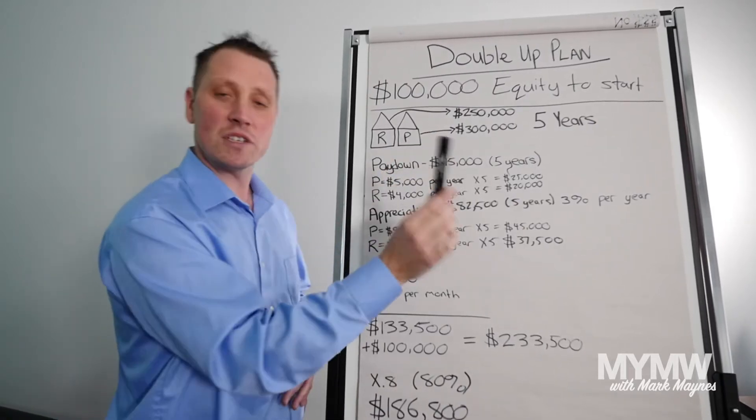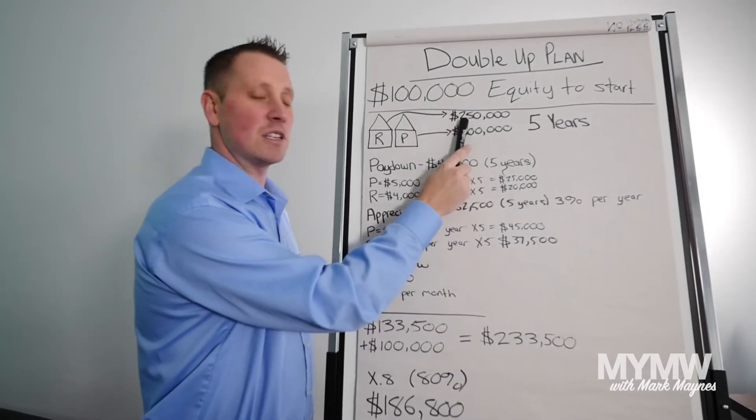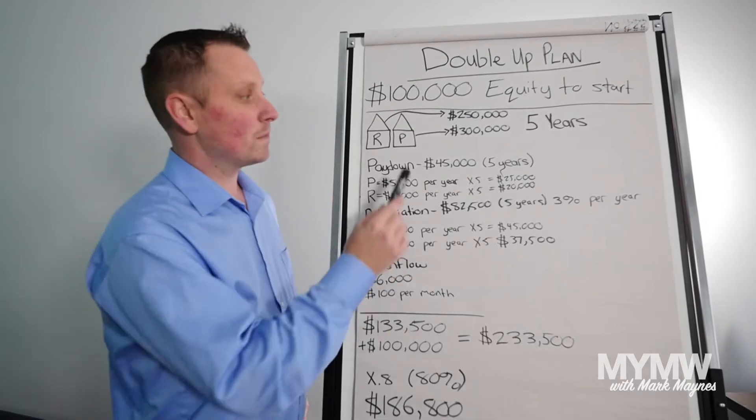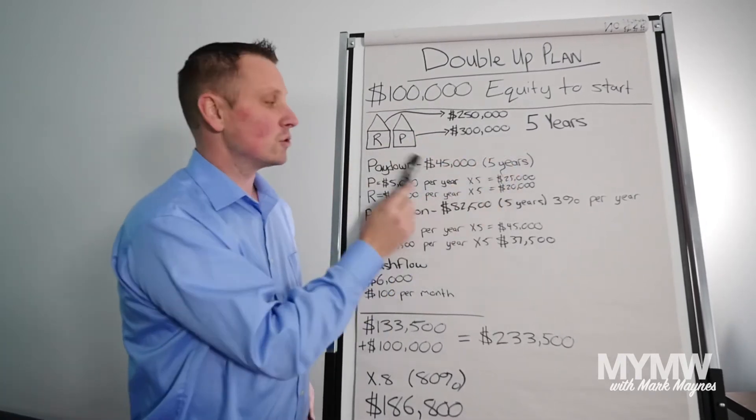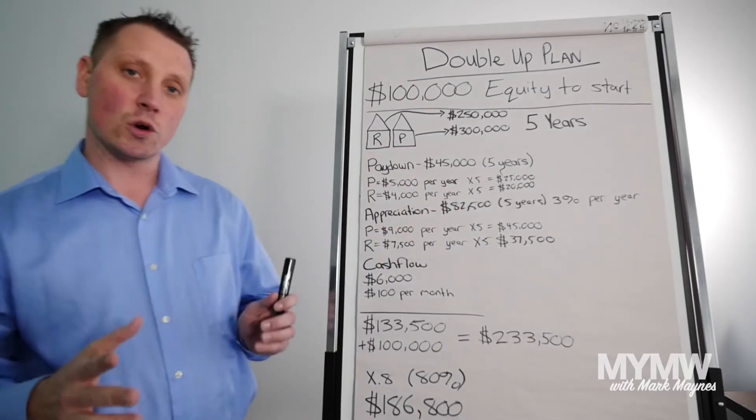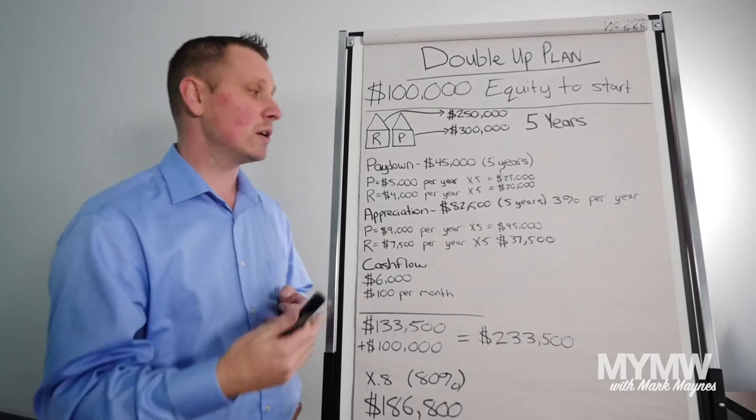Just for this example, we're going to say your house is worth $300,000 right now and the rental property you're buying is worth $250,000. So year one to five, this is a five year plan. You have one rental, one personal property. You've now taken out more debt because you own two houses.